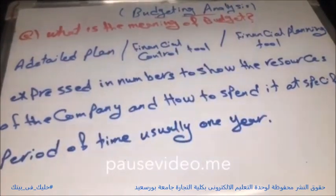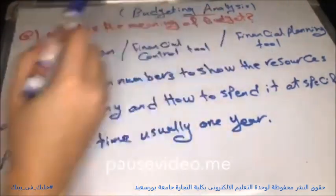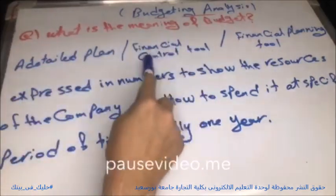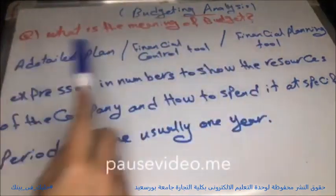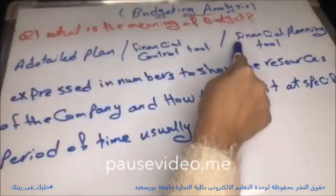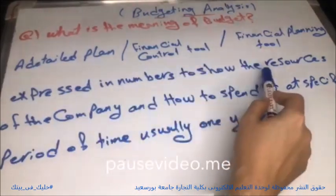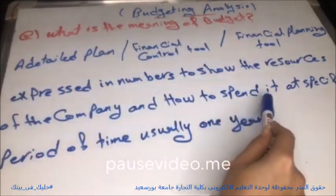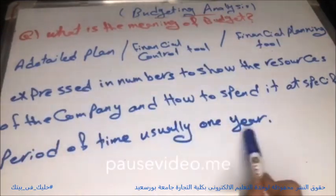Today, we are going to discuss budgeting analysis. First, we need to know what is the meaning of budget. Budget is a detailed plan or financial control tool or financial planning tool — all these terms are equal — expressed in numbers to show the resources of the company and how to spend it at a specific period of time, usually one year.